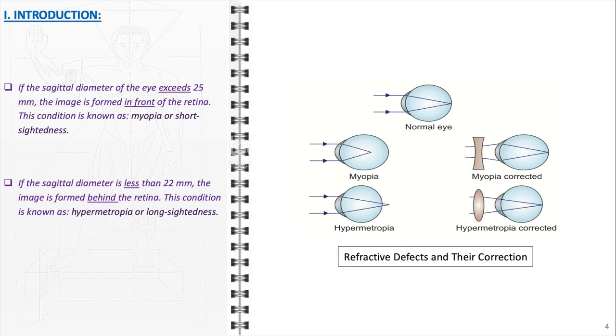Conversely, hypermetropia, or long-sightedness, occurs when the sagittal diameter is shorter, illustrated in the bottom left diagram. Here, the light would converge behind the retina if it continued, which blurs near vision. The correction for hypermetropia is shown in the bottom right, where a convex lens converges the light rays earlier, allowing for a clear focus on the retina.